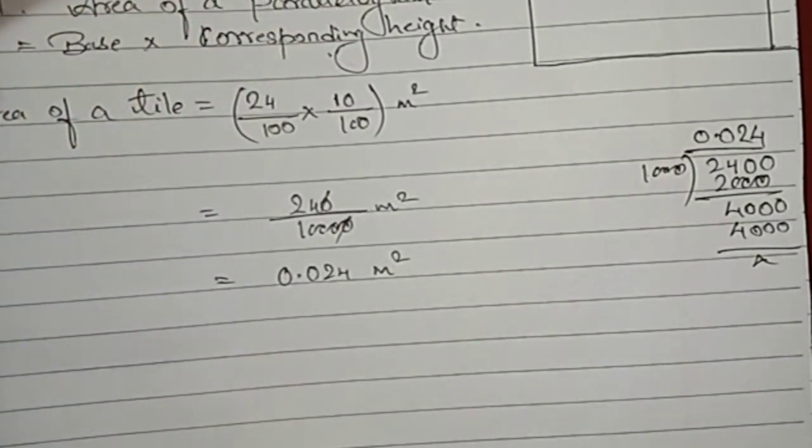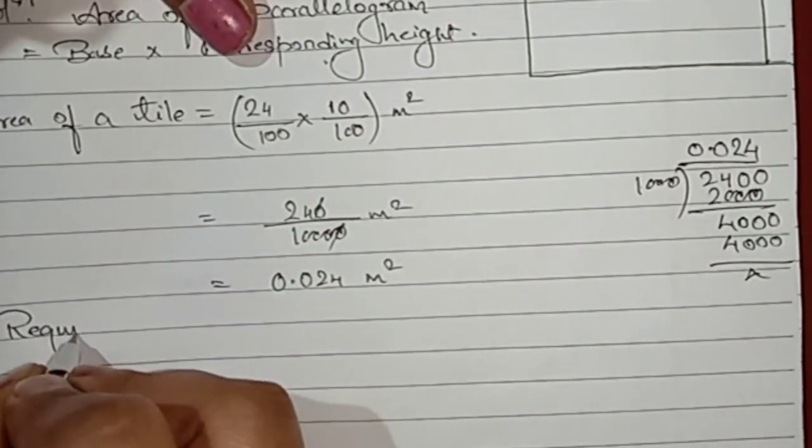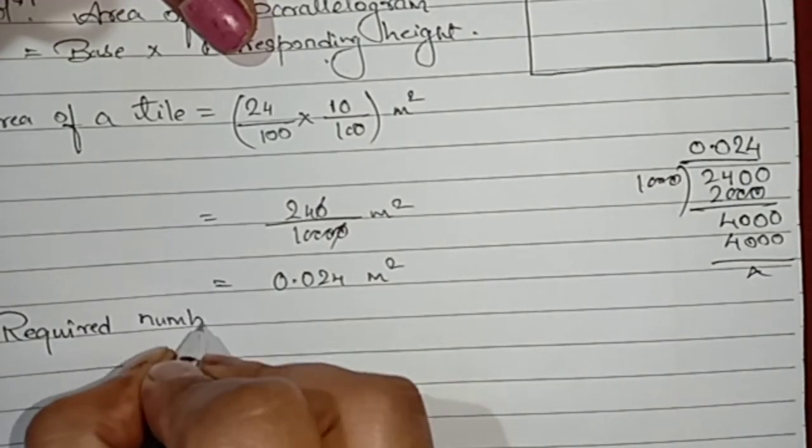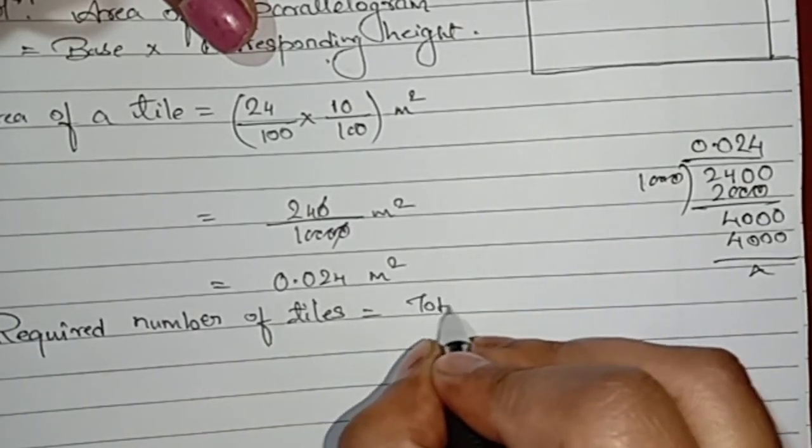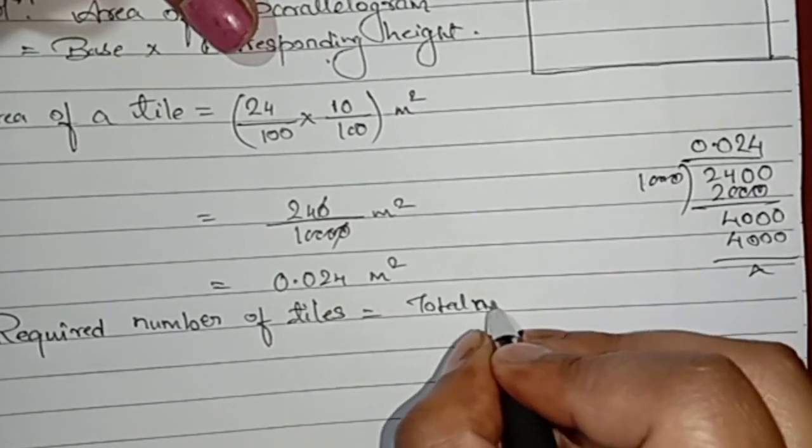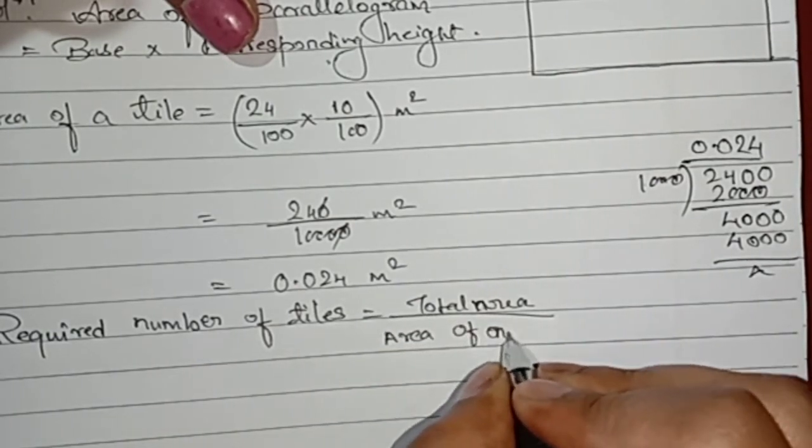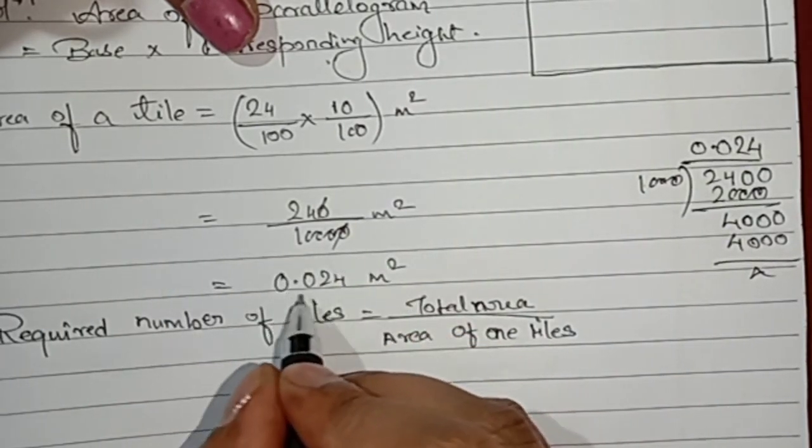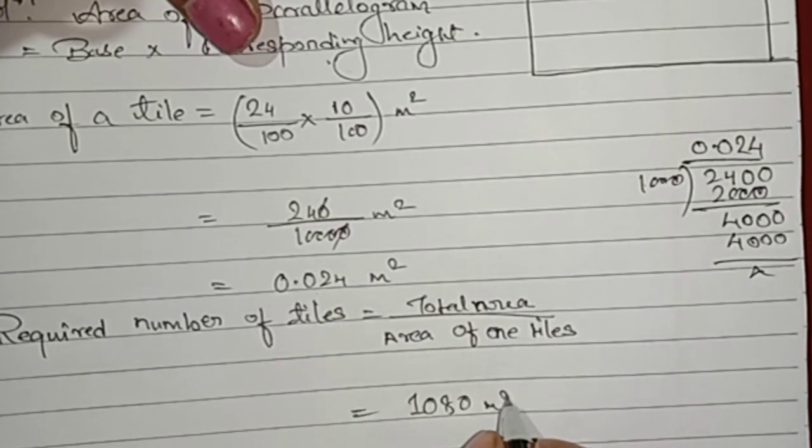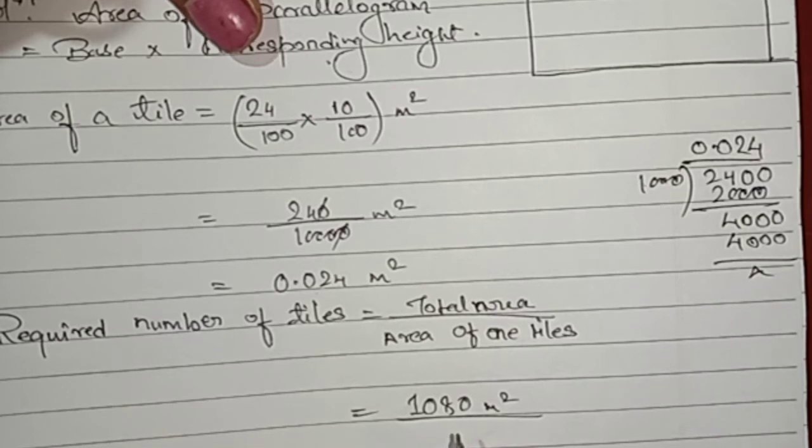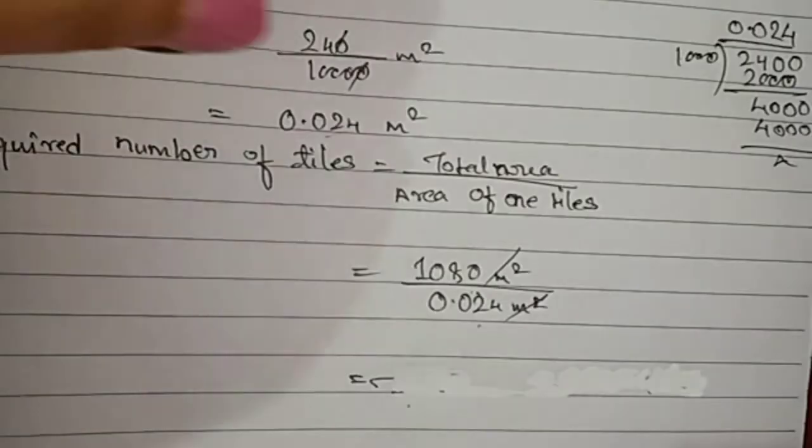Now we will find, we know that area of the floor is given 1080 meter square. We will find required number of tiles equal total area divided by area of 1 tile. Area of 1 tile we got how much? 0.024 meter square. So 1080 meter square divided by 0.024 meter square.